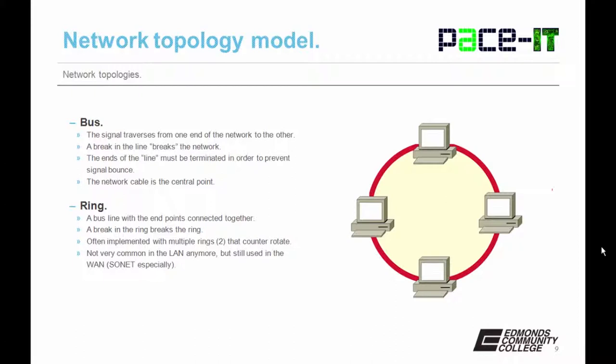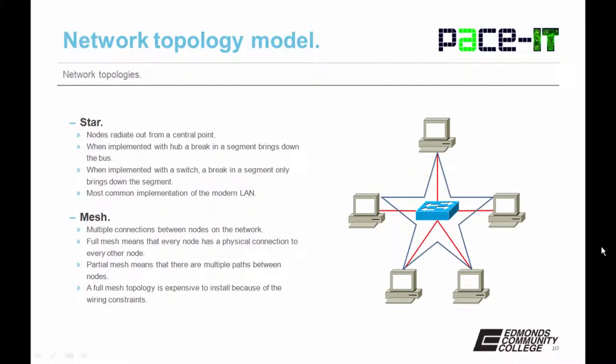Moving on from the ring, we have the star. The nodes radiate out from a central point. When a star topology is implemented with a hub, a break in a segment brings down the whole bus, because the hub retransmits out all ports. When implemented with a switch, a break in a segment only brings down that segment. It is the most common implementation in the modern LAN.